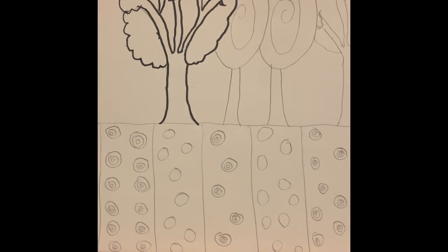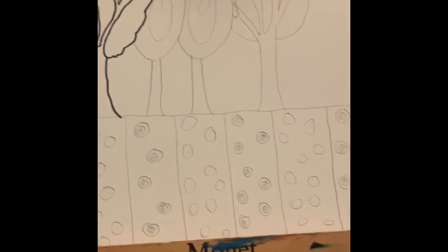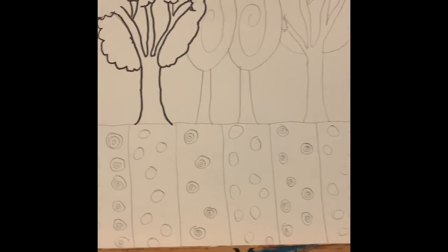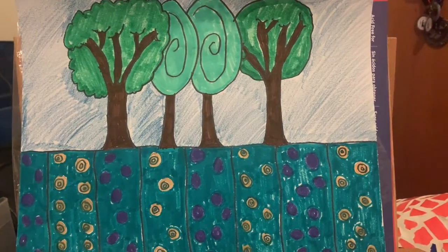All right, so that's one outlined tree, so I'm going to outline the rest of these and then I'm going to color them in, and we will see the final result. And here we are, here's my final result for the Heather Goller landscape.